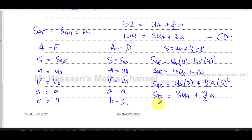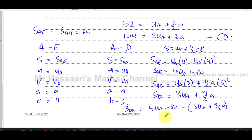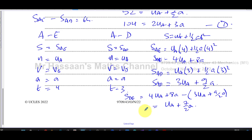Subtracting: four UA plus 8A minus (3UA plus nine-halves A) gives UA plus (16/2 − 9/2)A, which is UA plus seven-halves A. That equals the distance between D and E, which is 64 meters.